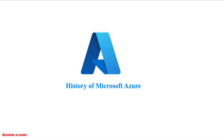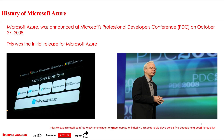This is Sangamesh from Beginner Academy and today we would be talking about the History of Microsoft Azure. Microsoft Azure was announced at the Microsoft Professional Developer Conference on 27 October 2008. This was the initial release of Microsoft Azure and during that time it was called Windows Azure.